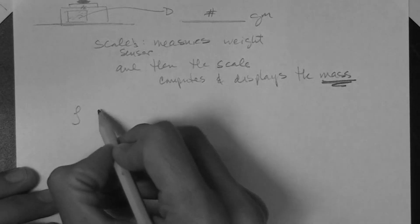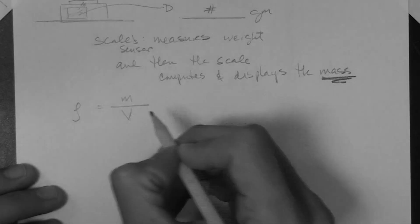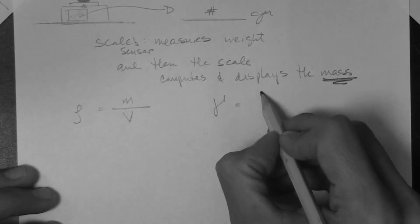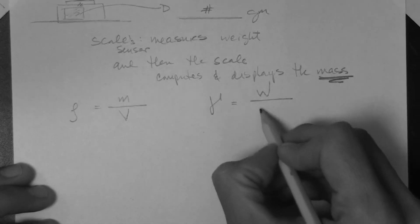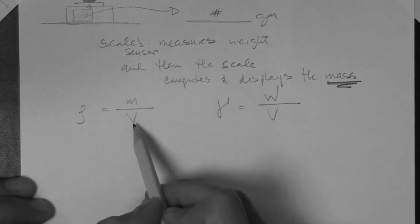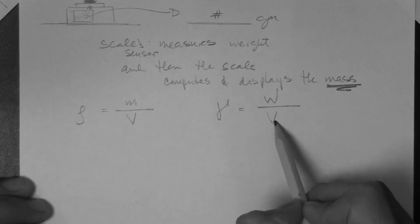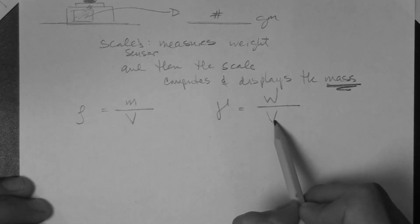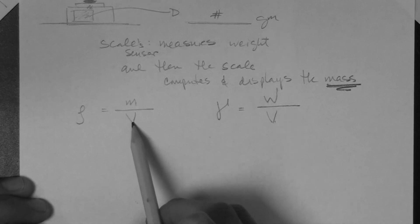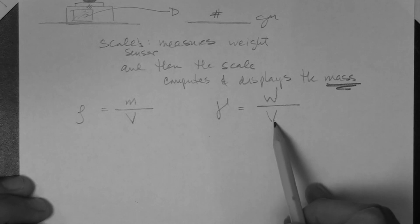Finally, density is the mass of an object divided by the volume of the object, with units of kilogram per meter cubed. Unit weight is the weight of the object divided by the volume of the object, with units such as kilonewton per meter cubed, pound per foot cubed, or pound force per foot cubed.